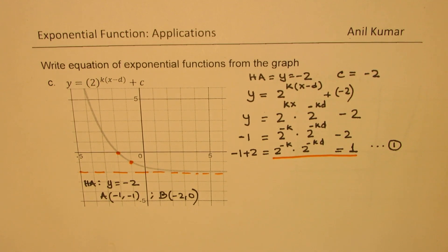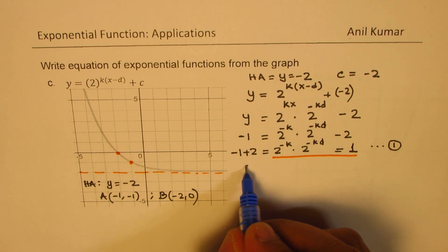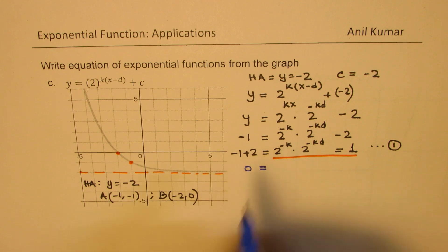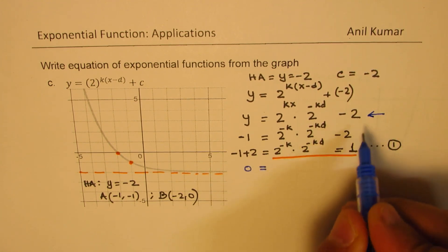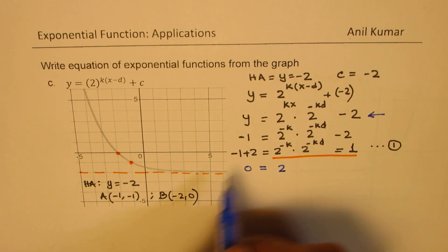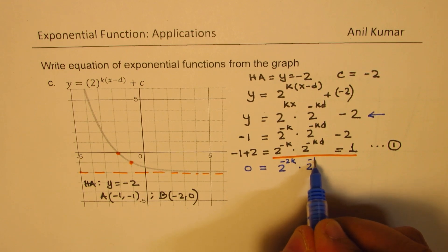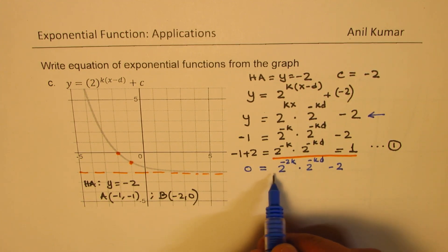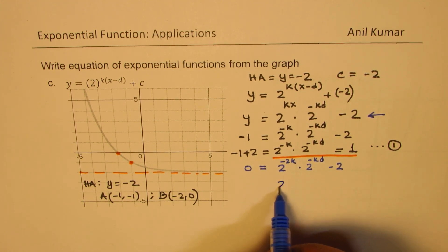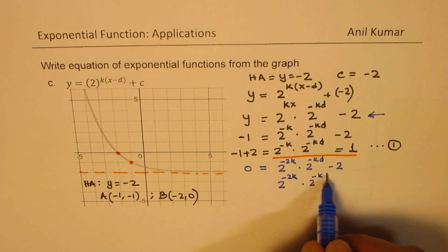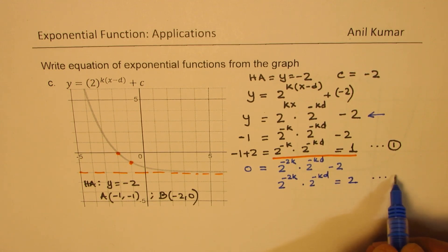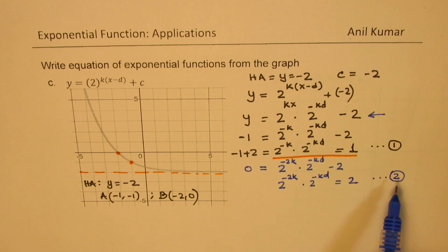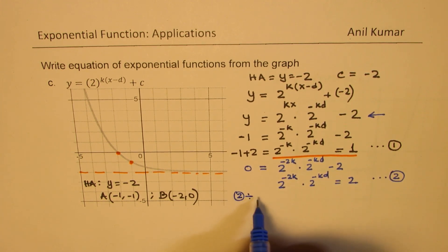Now substituting the second point B at (−2, 0): y equals 0 and x equals minus 2. We get 2 to the power of minus 2k times 2 to the power of minus kd minus 2. Rearranging, 2 to the power of minus 2k times 2 to the power of minus kd equals 2. We call this equation 2.